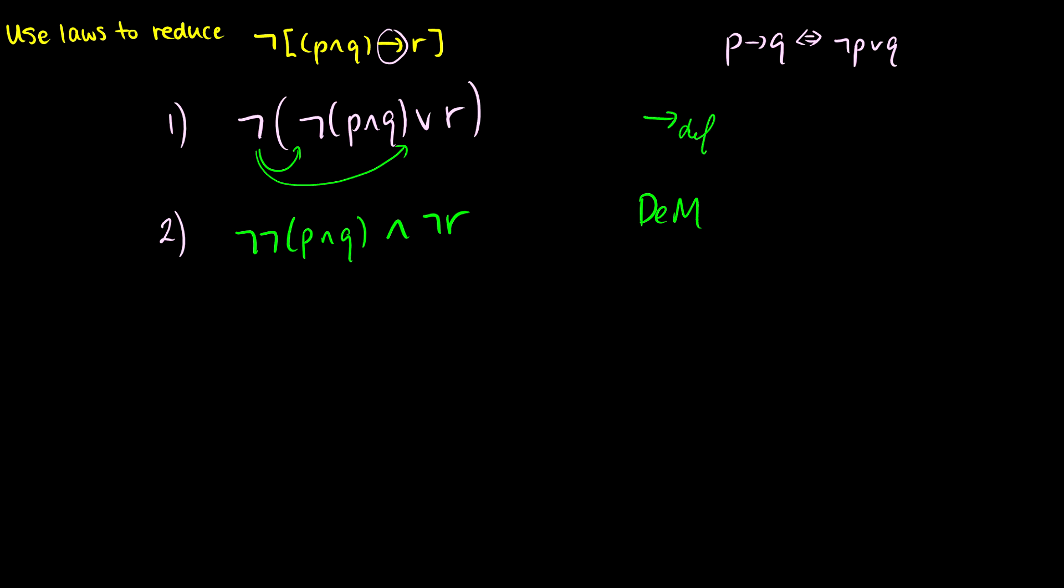I'll label this, this is the definition. Then for the third step, we'll do double negation on the NOT NOT(P and Q). So we get P and Q and NOT R and that's just double negation. So that looks like it's as far as it can go down. So instead of writing NOT(P and Q) arrow R, we could just write P and Q and NOT R. That was a pretty quick one.